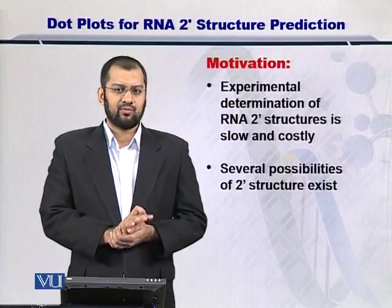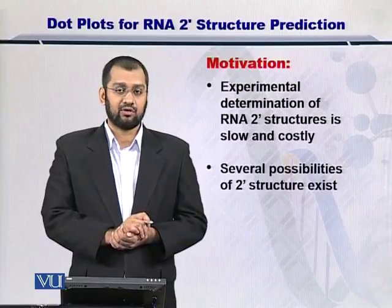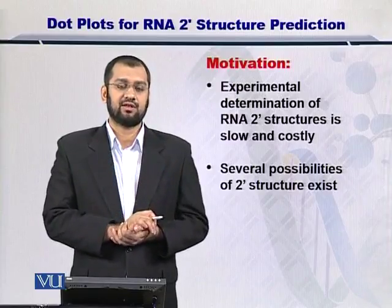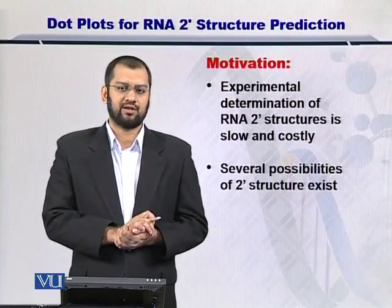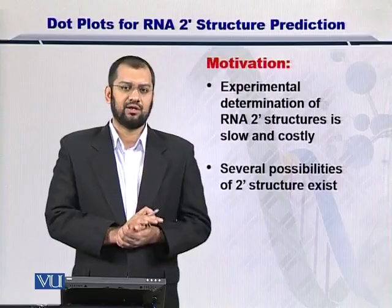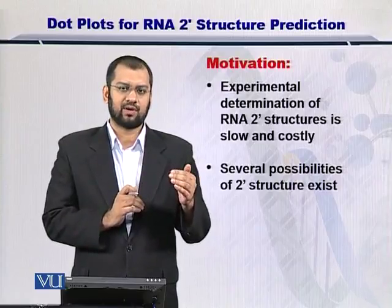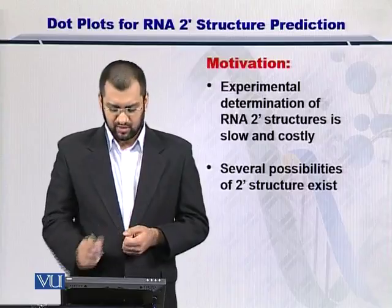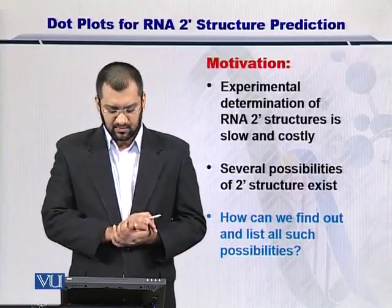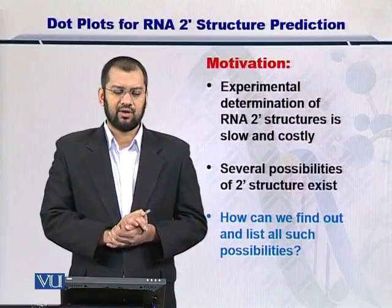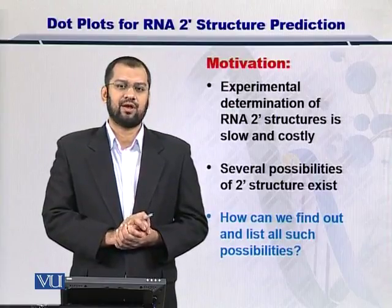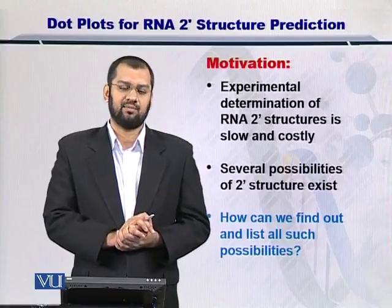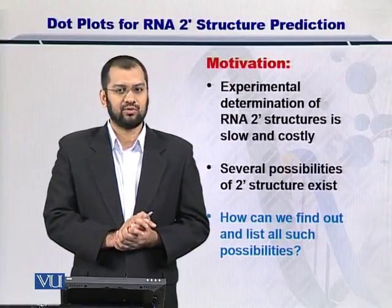Given that we need to predict the secondary structures, the problem is not simple because there are too many possibilities that exist. If we were to successfully determine the secondary structure of an RNA molecule, we really need to list down all of the secondary structure possibilities and then select the optimal one. So the important thing now is how do we list down all such possibilities? We have to find each and every one of them and then be able to list them down towards comparing them.